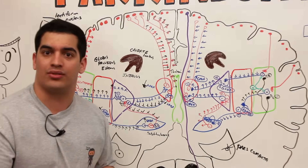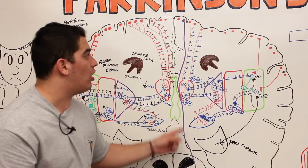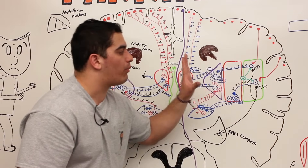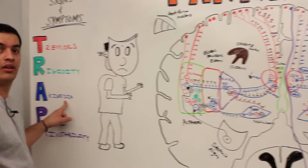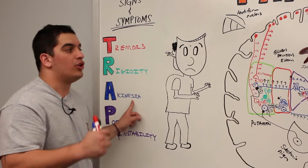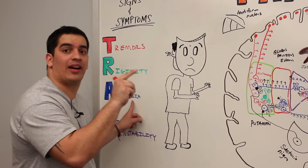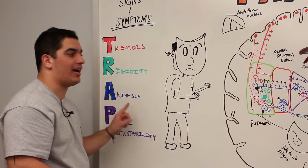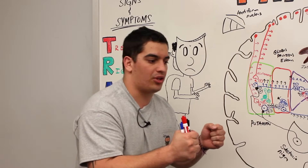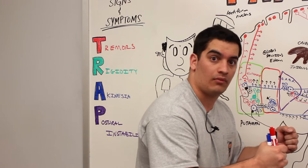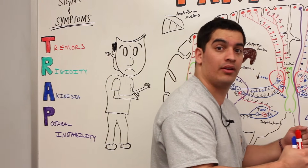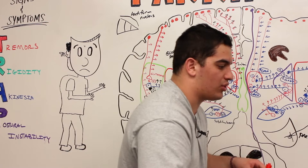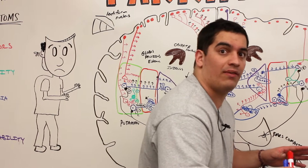With this significant drop, these patients are going to have a hard time contracting their muscles. This effect on both the direct and indirect pathways is the primary cause of akinesia or bradykinesia. They'll have a hard time initiating movement, stopping movement, and resisting movement. If they start walking, they have what's called a shuffling gait — a really hard time getting started.